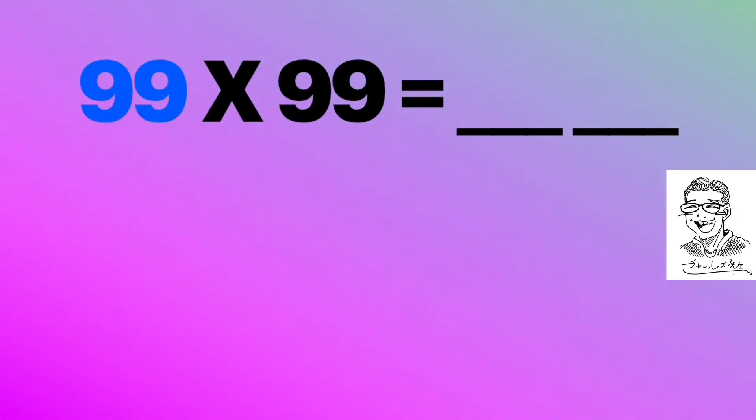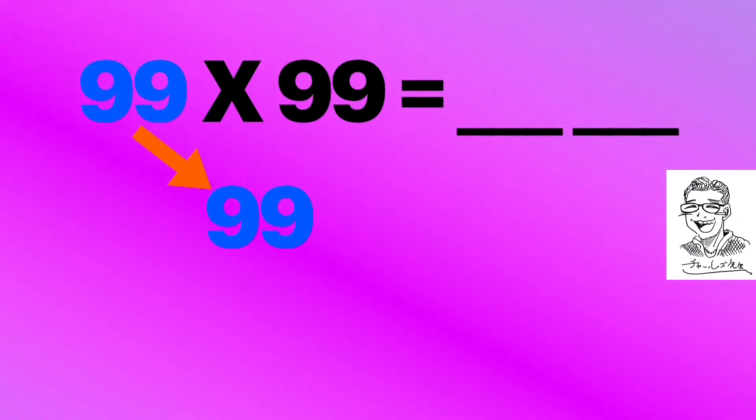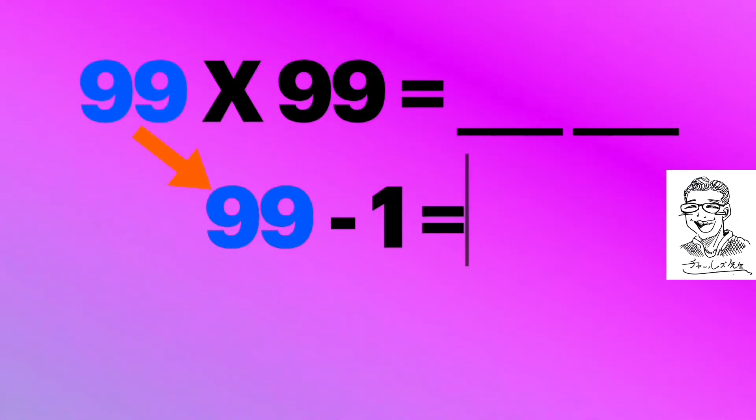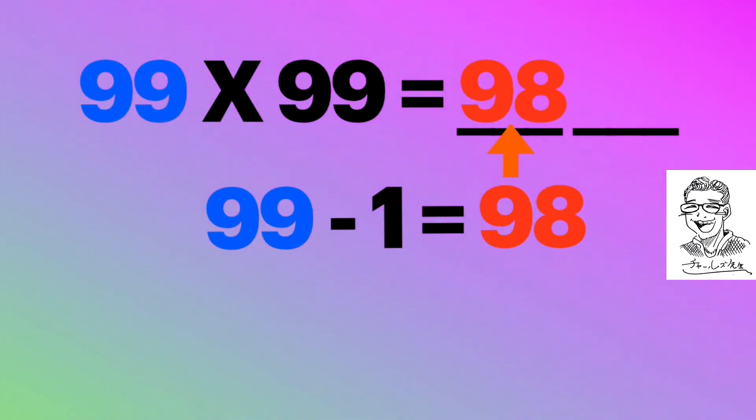Now let's try another one. 99 times 99. So again, we are going to deduct 1 from 99. 99 minus 1 equals 98. So those are the first two digits of the answer.